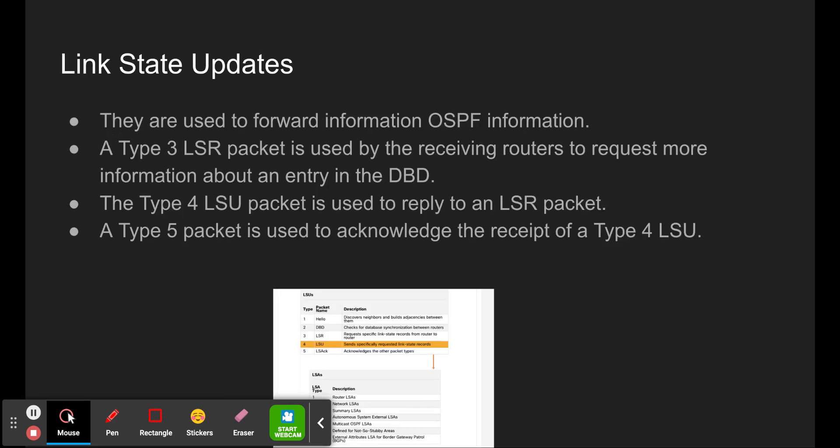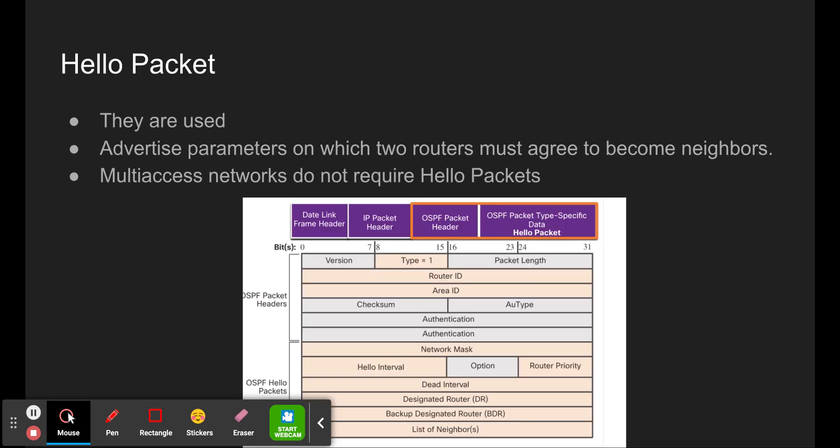Link state updates are used to forward OSPF information. A Type 3 LSR packet is used by receiving routers to request more information about an entry in the DBD. The Type 4 LSU packet is used to reply to an LSR packet, and then a Type 5 packet acts like a receipt to acknowledge that the Type 4 was received. Hello packets are used to advertise parameters on which two routers must agree to become neighbors; multi-access networks also require hello packets.